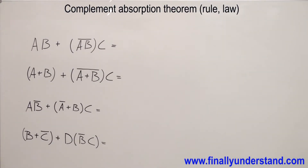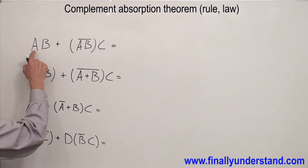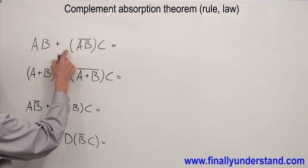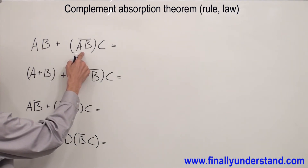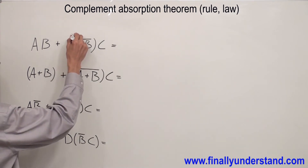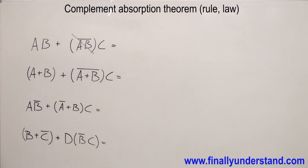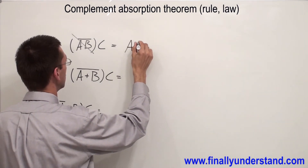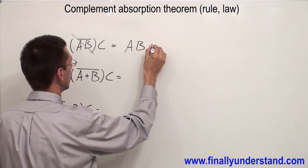Let's practice the Complement Absorption Theorem. Look at the first example. I have an AND gate and a NAND gate. AND and NAND are complements. The NAND is AND'd with C. The Complement Absorption Theorem says that anytime I have complements OR'd together and one of them is AND'd with something else, that complement is supposed to be dropped out.